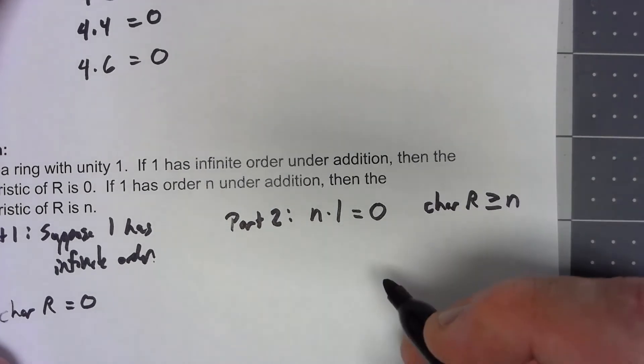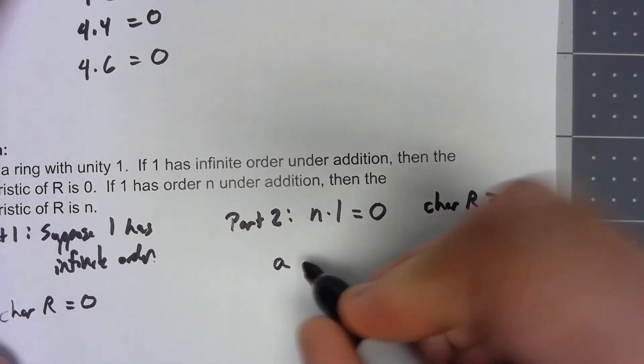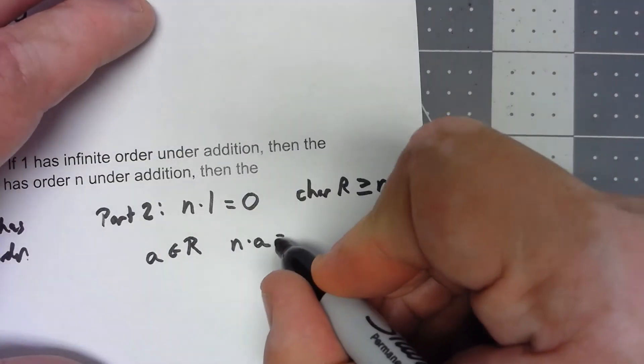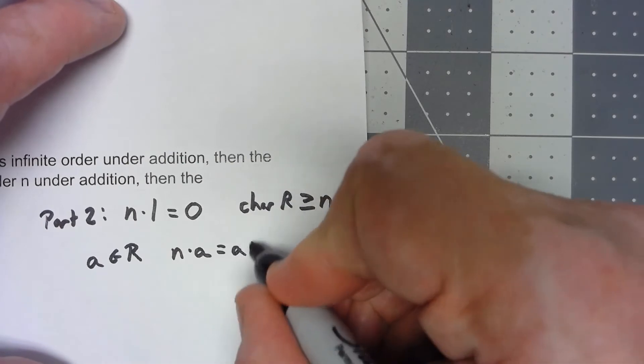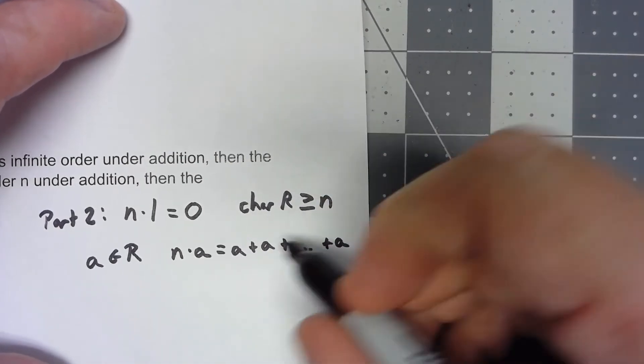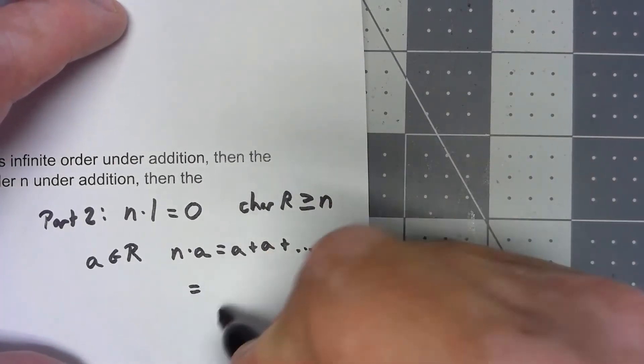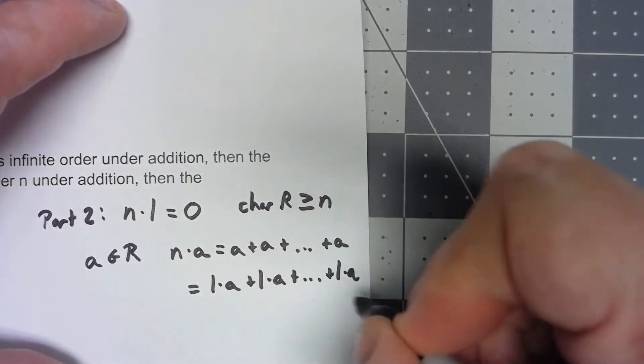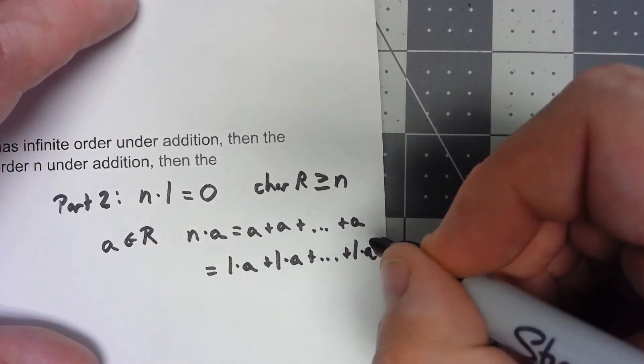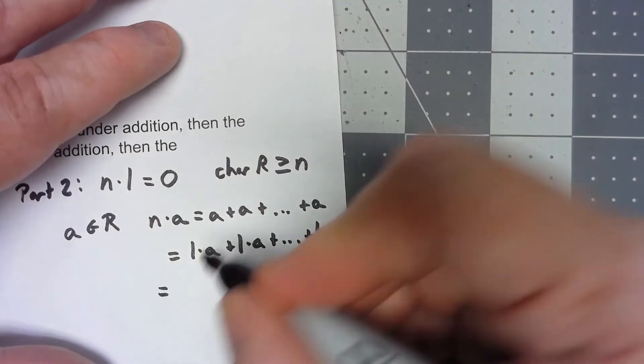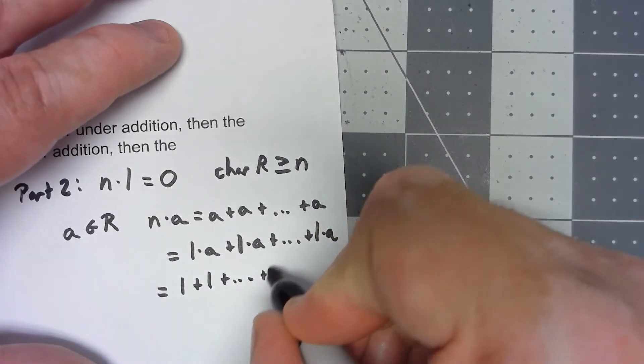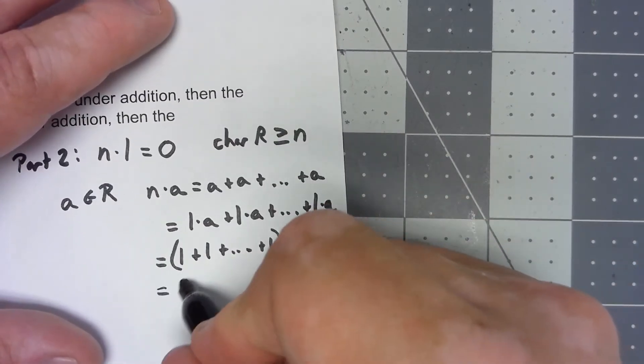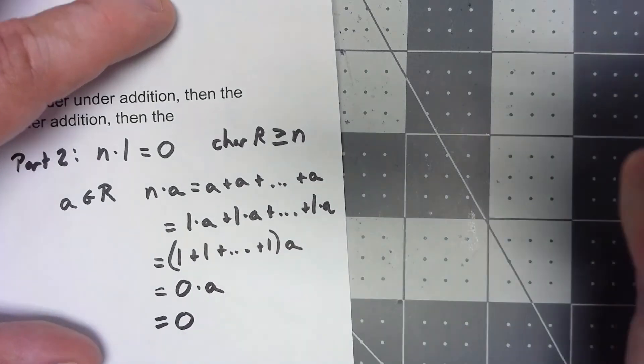So let's say that a is in my ring. Let's think about what is n times a. Well, by definition, n times a is a plus a plus ... where there's n copies there. I can write that as 1 times a plus 1 times a—again, there's still n copies. And then by doing a distribution thing, I can say I've got (1 plus 1 plus ... n copies of 1) times a, but that n copies of 1 has to be 0.